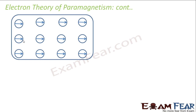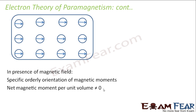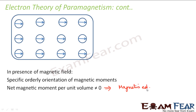In presence of the magnetic field, specific orderly orientation of magnetic moments takes place, which means the substance gets magnetized. The net magnetic moment per unit volume is no longer zero — this itself means that the substance has gotten magnetized.